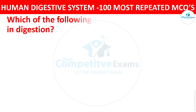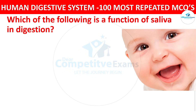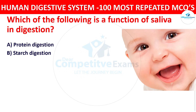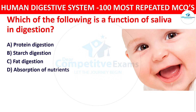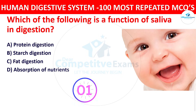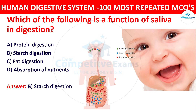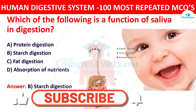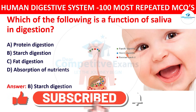Question number twenty-one: Which of the following is the function of saliva in digestion? The options are protein digestion, starch digestion, fat digestion, or absorption of nutrients. The right answer is starch digestion. Saliva contains amylase, an enzyme that begins the digestion of starch into simpler sugars.